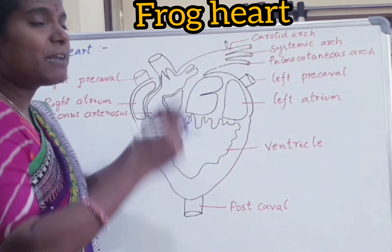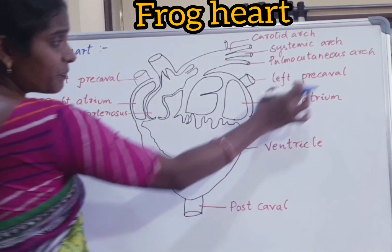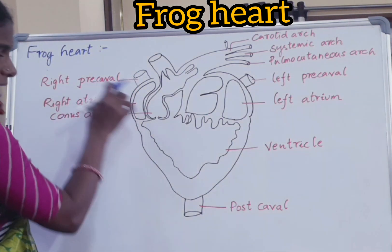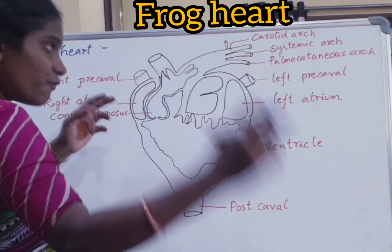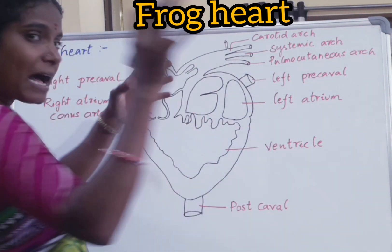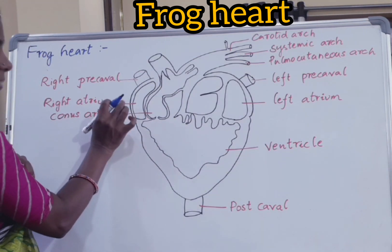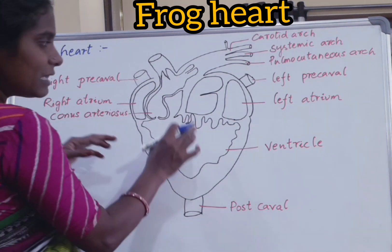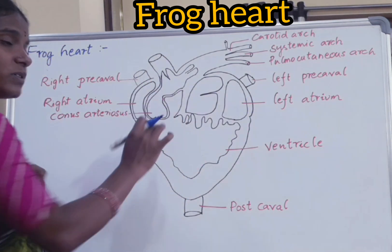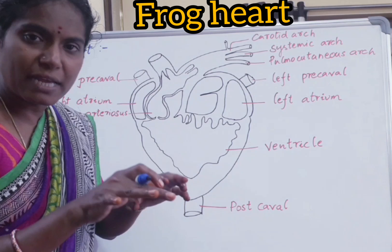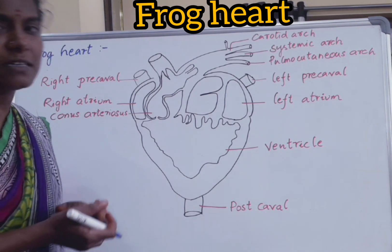Blood leaves the ventricle through the conus arteriosus and through these arches, blood is pumped to different parts of the body. The left precaval, right precaval, and post-caval veins collect deoxygenated blood from different parts of the body and pour it into the sinus venosus, and from there to the right atrium, and from the right atrium to the ventricle. Since there is only one ventricle, oxygenated and deoxygenated blood gets mixed, which is why we call this an incomplete blood circulation.